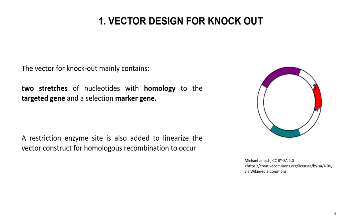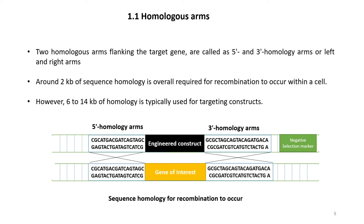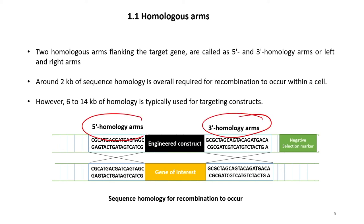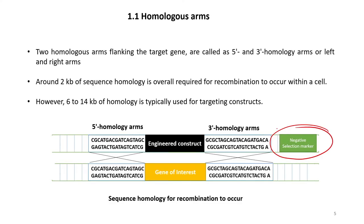The two homologous stretches, or homology arms, flank the target gene. In the engineered construct you can see the 3 prime and 5 prime homology arms flanking the gene of interest on both sides. Around 2 kb of homology is required for recombination to occur within a cell; however, in general 6 to 14 kb of homology is typically used for targeting constructs. The engineered construct also contains a negative selection marker.